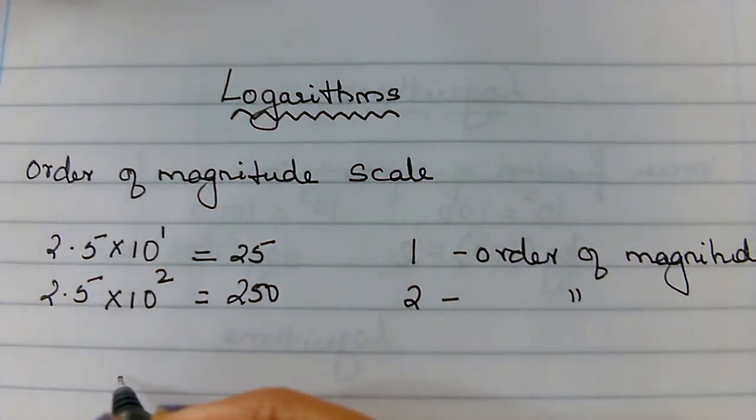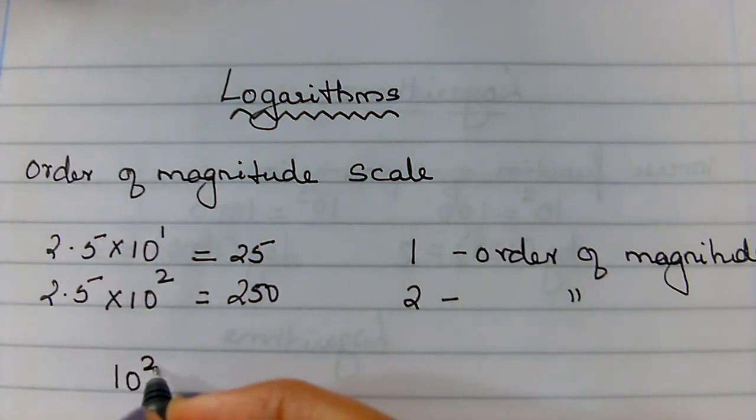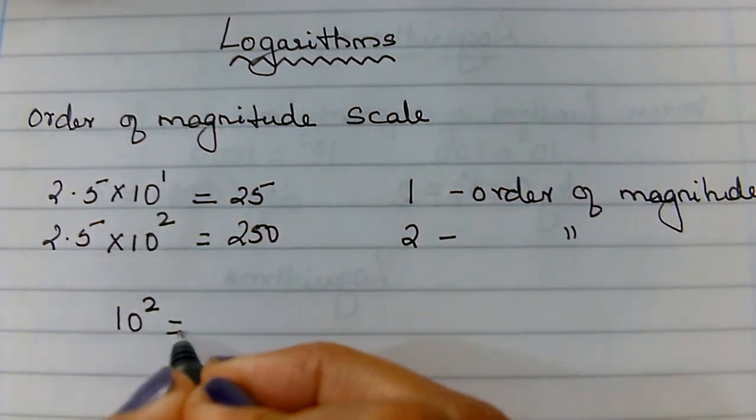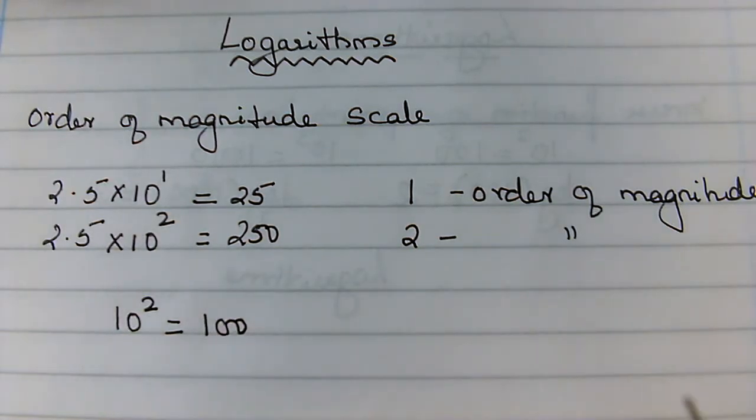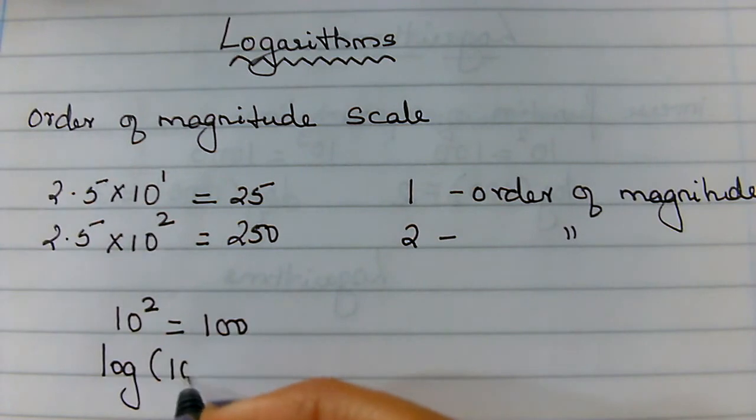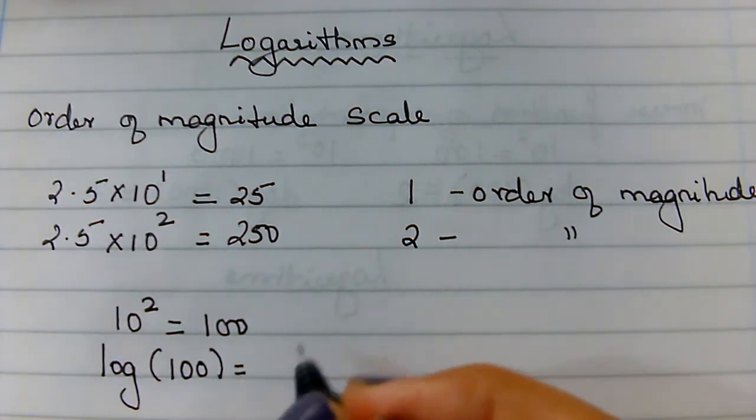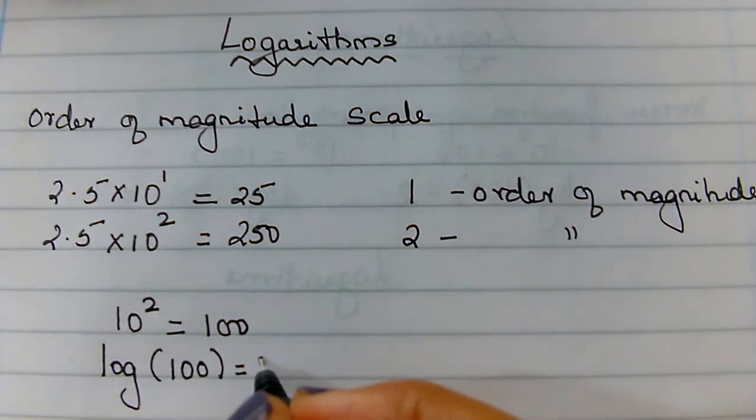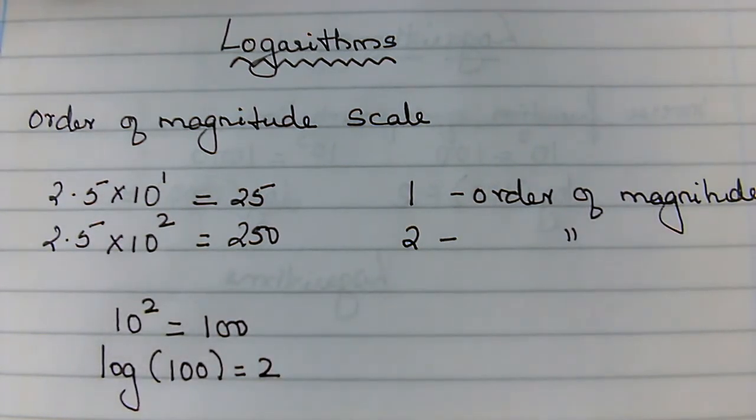If we have 10 to the power 2, we know that 10 to the power 2 is equal to 100. So what log does is, if we do log 100, the order of magnitude here is 2, right? So log 100 would give you a 2.